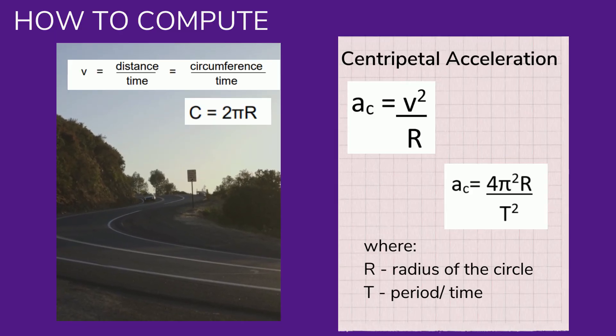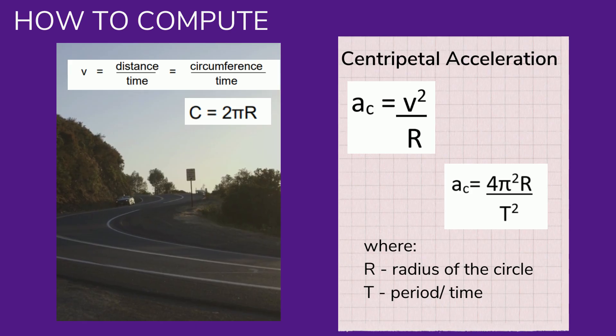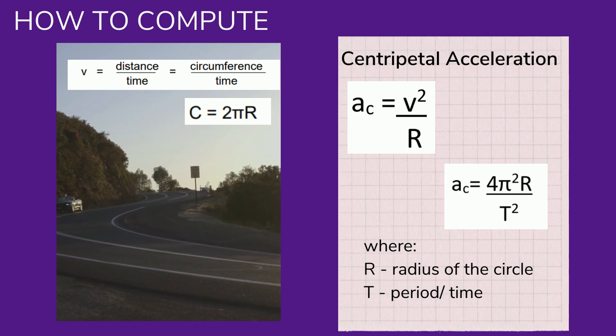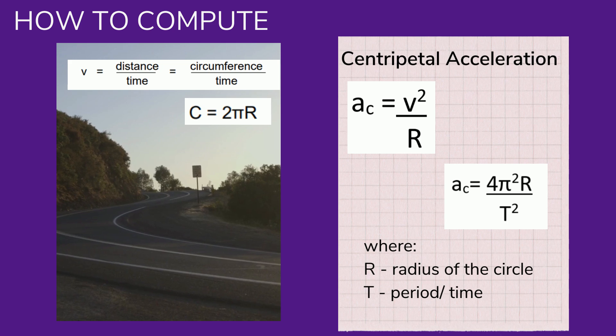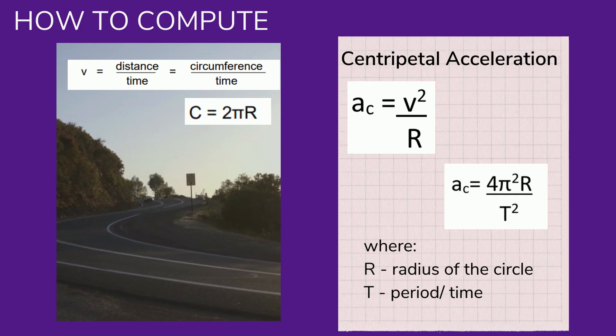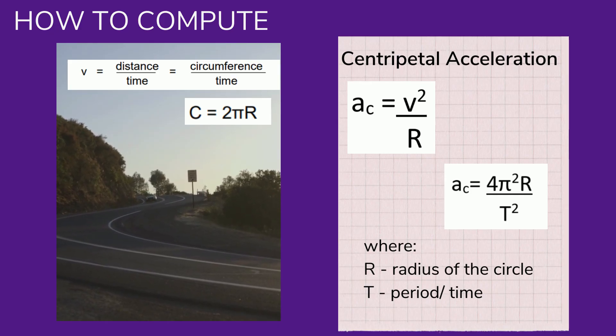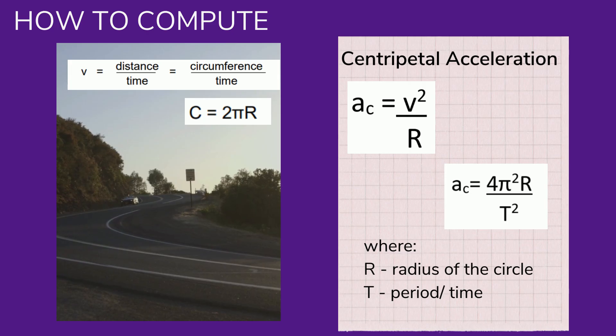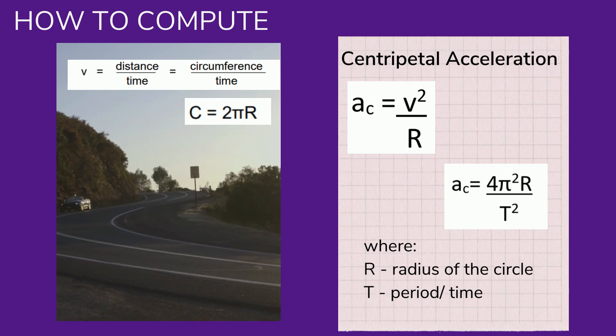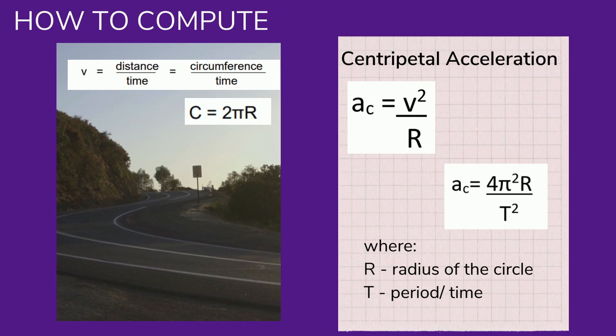An object moving in a circle is experiencing an acceleration. Even if moving around the perimeter of a circle with a constant speed, there is still a change in velocity and subsequently an acceleration.